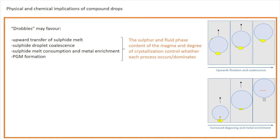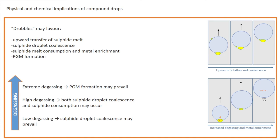Let's summarize the physical and chemical implications of drobbles. Drobbles may favor the upward transfer of sulfide melt, the coalescence of sulfide droplets, the consumption and metal enrichment of the sulfide melt, and probably also PGM formation. The sulfur and fluid phase content of the magma and its degree of crystallization control whether each of these processes occurs. If we think in terms of intensity of degassing: low degassing may favor the coalescence of sulfide droplets, whereas high degassing could favor both droplet coalescence and sulfide consumption. Finally, extreme degassing can lead to PGM formation, even if the magma is initially sulfur rich and the sulfide melt nickel and copper rich.